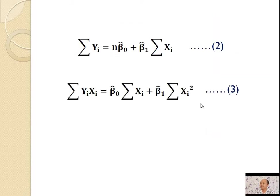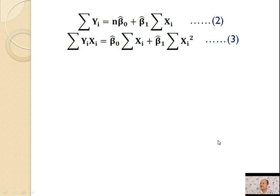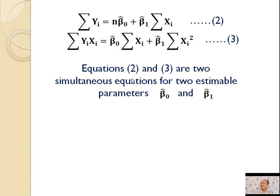Equations 2 and 3 are known as the normal equations. They are two simultaneous equations for the two estimable parameters β̂₀ and β̂₁.